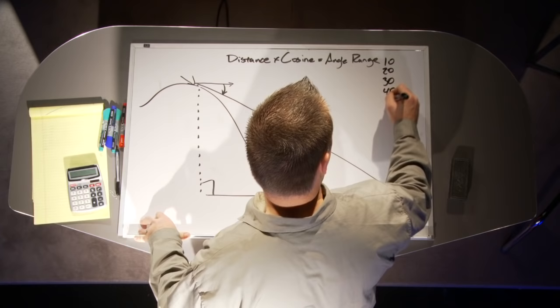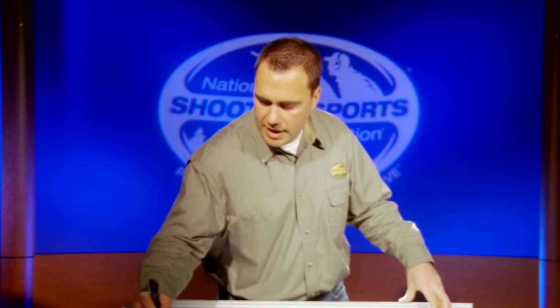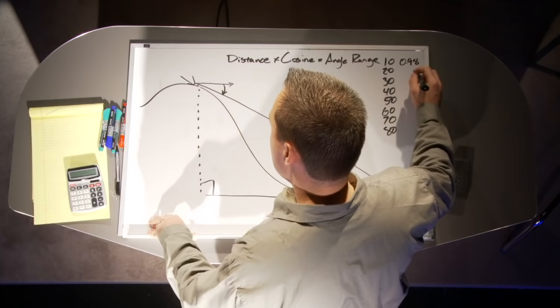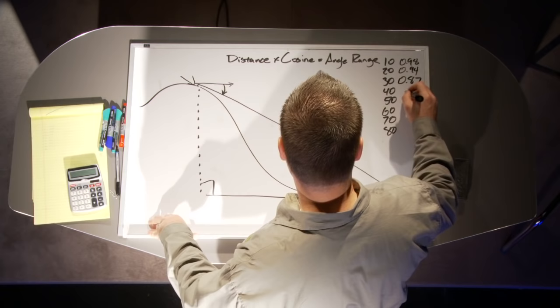At 10 degrees, the cosine is 0.98. At 20 degrees it's 0.94. At 30 degrees it's 0.87. At 40 degrees it's 0.77. These cosines are all smaller than 1, meaning when we multiply the range by these numbers we're going to get a smaller distance, which is what we want.